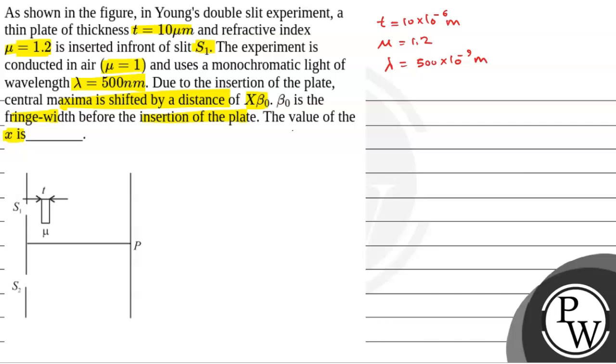So we have said that after the insertion of the plate, central maxima is shifted by distance of x beta naught. So let's see that central maxima is shifted, that is y equals x beta naught. Right. So beta naught is equal to fringe width.